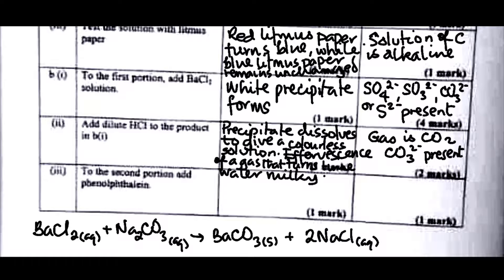Actually, if just based on this test, SO3²⁻ can also give you a similar result. What will differentiate SO3²⁻ from CO3²⁻ is that SO3²⁻ will decolorize acidified potassium permanganate(VII) or acidified potassium dichromate(VI). That is what we can use to differentiate SO3²⁻ from CO3²⁻. Otherwise any of those two would work for this.